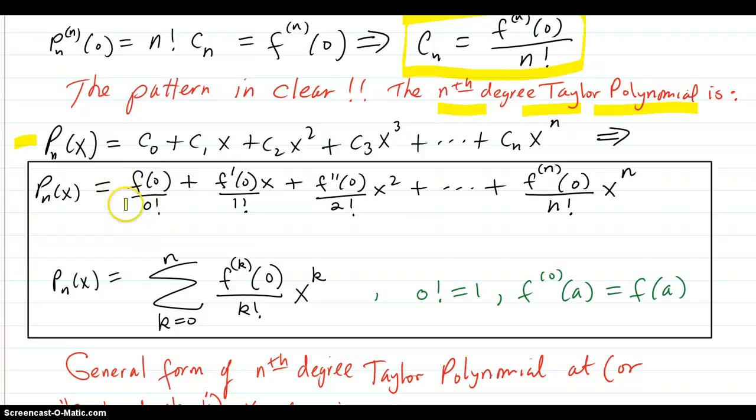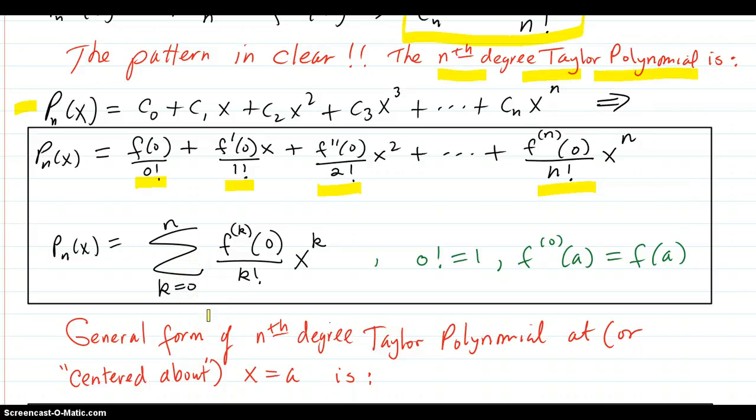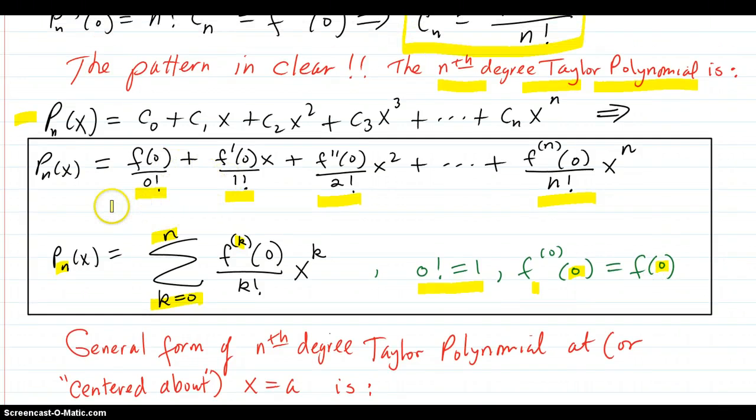So we have that all these coefficients are determined. And if you wanted to write that in summation notation, it would be k equals zero to n of the kth derivative of f at zero over k factorial times x to the k. And we know that zero factorial is one, and the zeroth derivative of f is just f itself. So there's your formula. Now you can just use this, instead of building up all the coefficients from scratch.